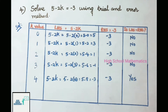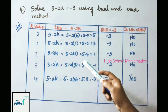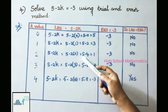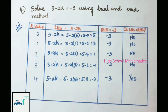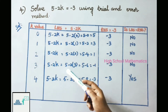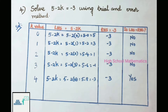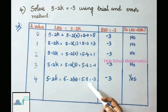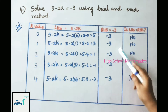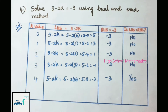When k = 2: LHS = 5 - 4 = 1, RHS = -3, not equal. When k = 3: LHS = 5 - 6 = -1, RHS = -3, not equal. When k = 4: LHS = 5 - 8 = -3, RHS = -3. Therefore LHS = RHS, so k = 4 is the solution for the given equation.